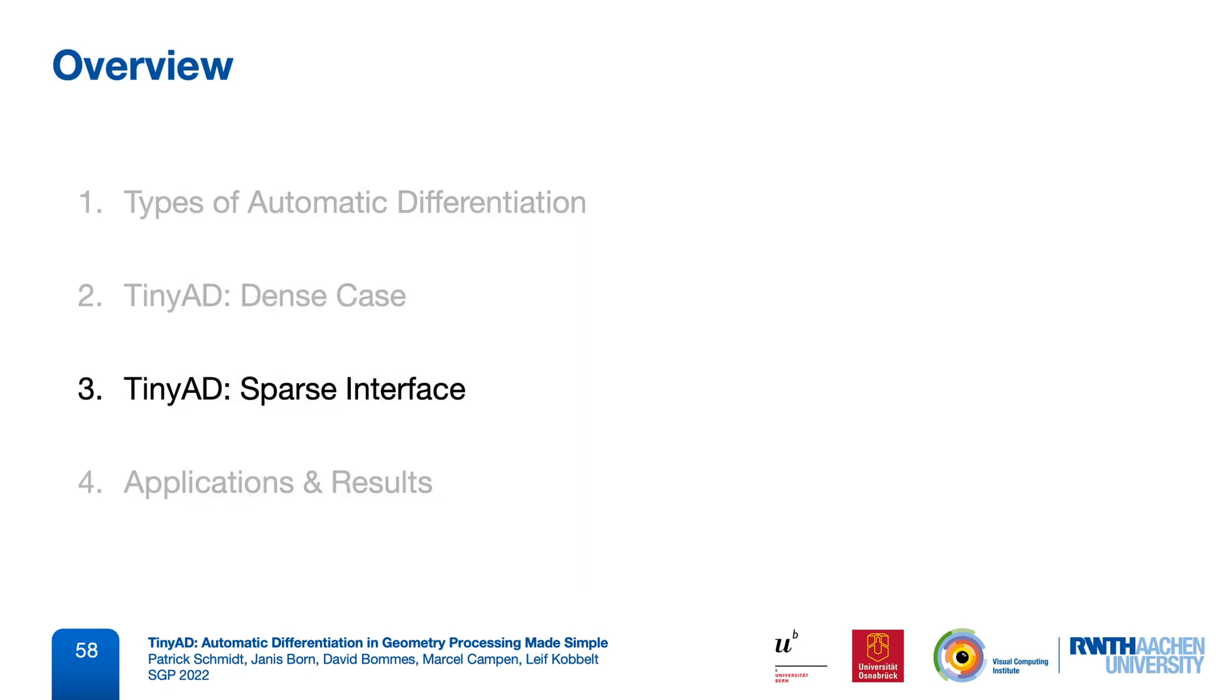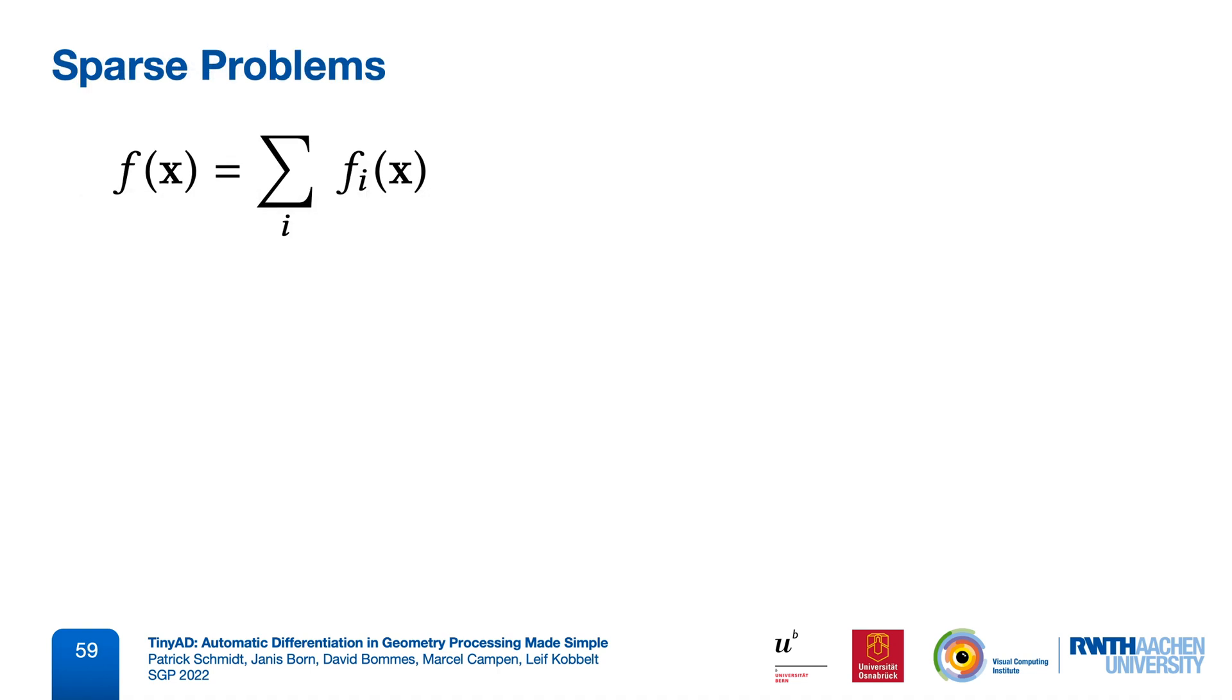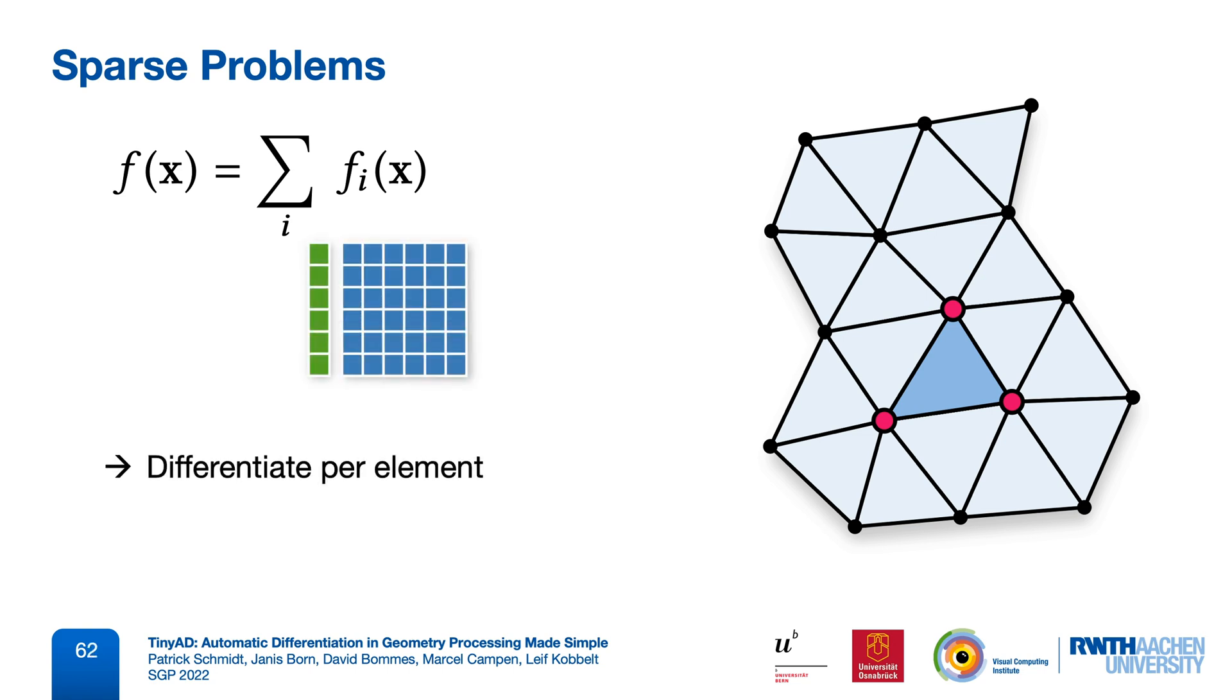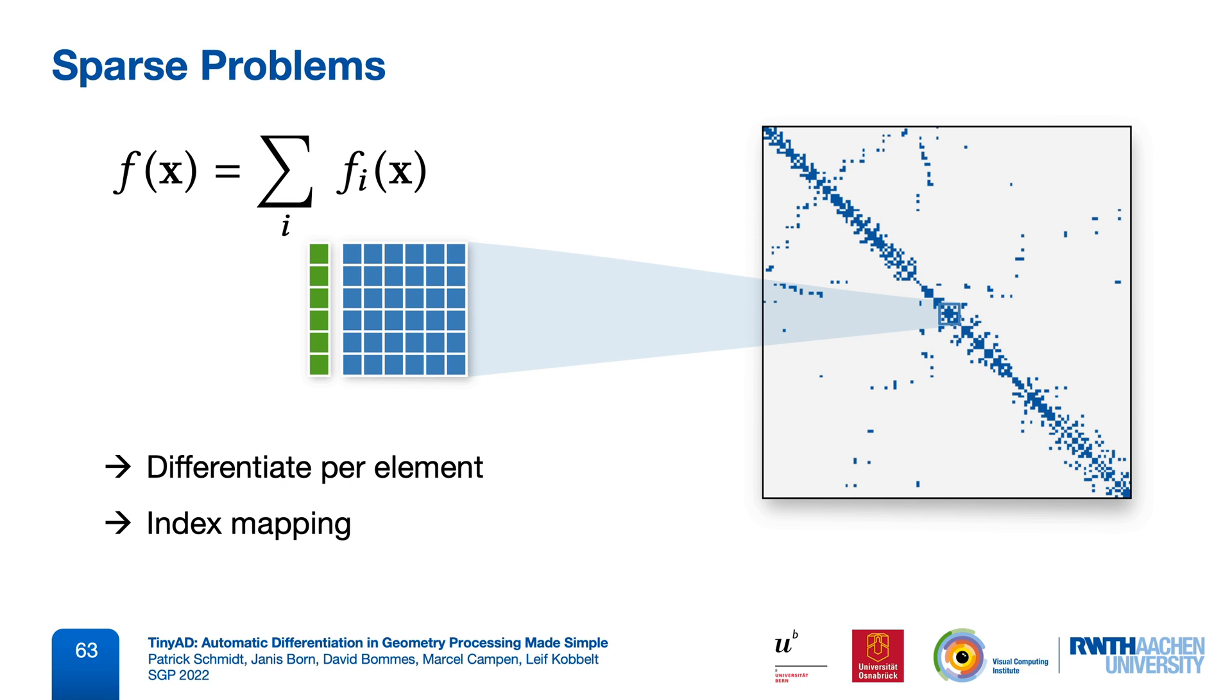Often our objective is a sum over a set of elements, for example associated with the triangles of our mesh, and each element only depends on a small number of variables. This means that we can efficiently differentiate these small fixed-size problems separately, and only then assemble the global derivatives. Our interface lets us express these local-global relationships very compactly, and takes care of all the index mapping.